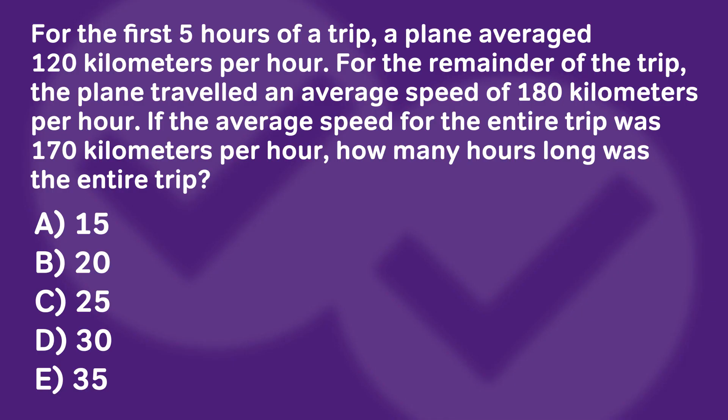Let's read the problem out first. For the first five hours of a trip, a plane averaged 120 kilometers per hour. For the remainder of the trip, the plane traveled an average speed of 180 kilometers per hour. If the average speed for the entire trip was 170 kilometers per hour, how many hours long was the entire trip? So what most people want to do is to set up a big algebra equation, and it's going to take you a long time.